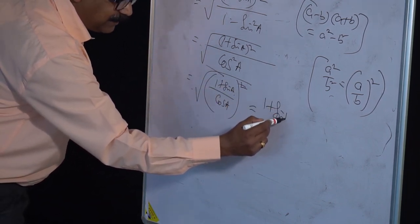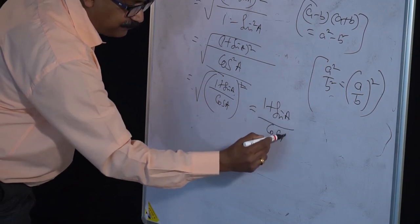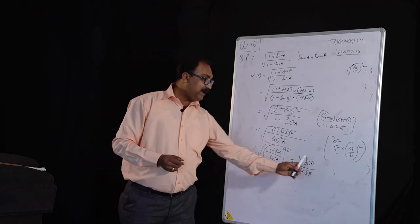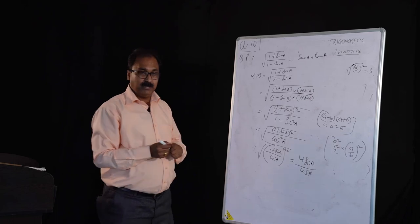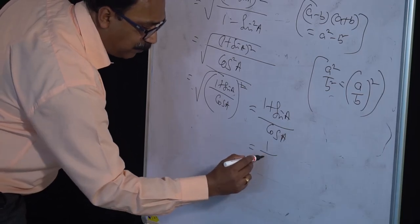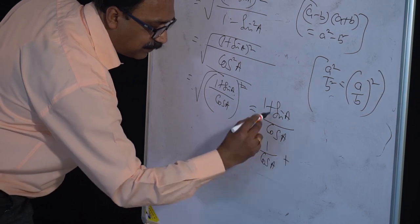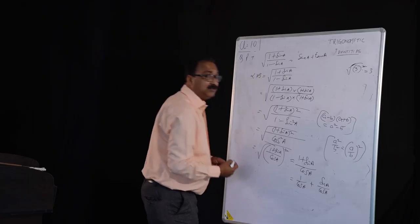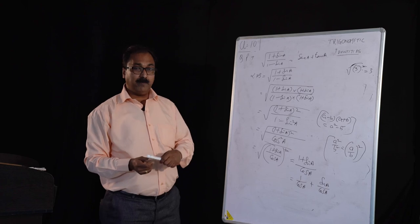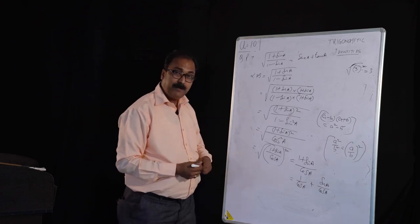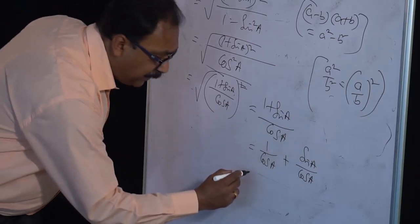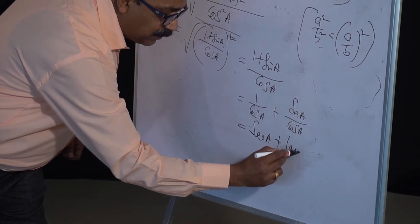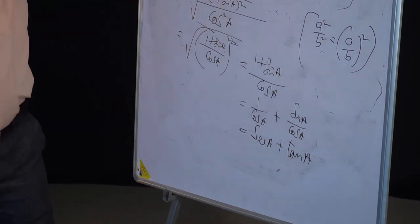Now we have (1 plus sin A) by cos A. Separate the numerator with the common denominator: 1 by cos A plus sin A by cos A. The formula gives: 1 by cos is sec A, and sin by cos is tan A. So the answer is sec A plus tan A — equal to the right hand side.